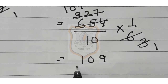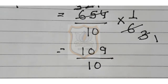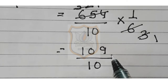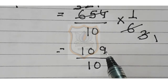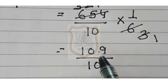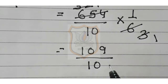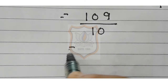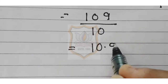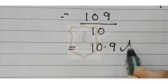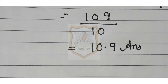So we have 109 upon 10. The denominator has 1 zero, so the decimal moves 1 digit towards the left. That is equal to 10.9. This is our answer.